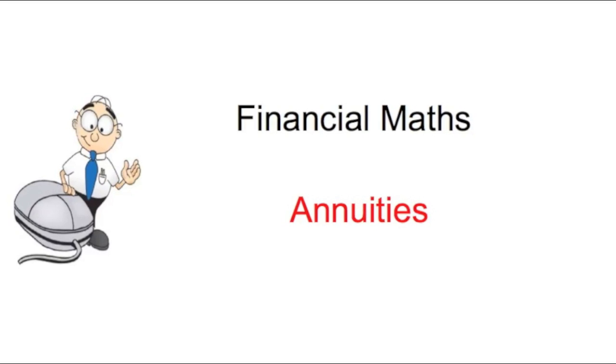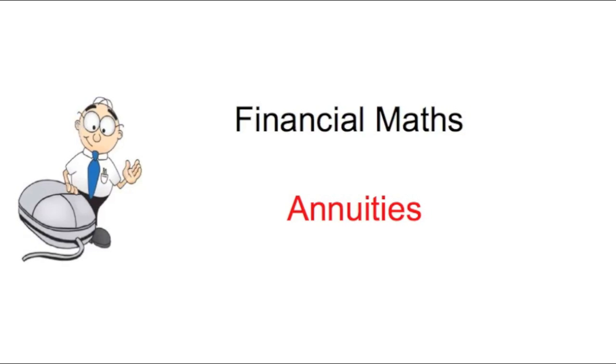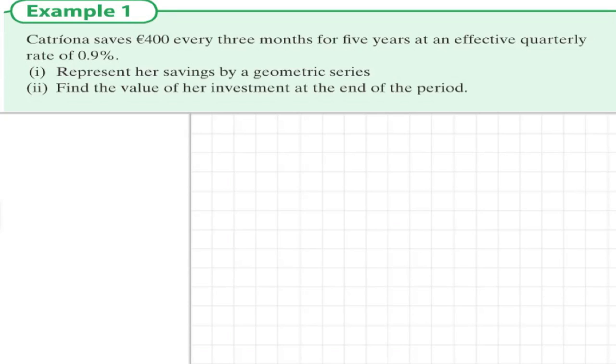Financial maths: annuities. An annuity is an installment saving. Katrina saves 400 euros every three months for five years with a quarterly rate of 0.9%. Represent your savings by a geometric series. Let's write down firstly what we have.